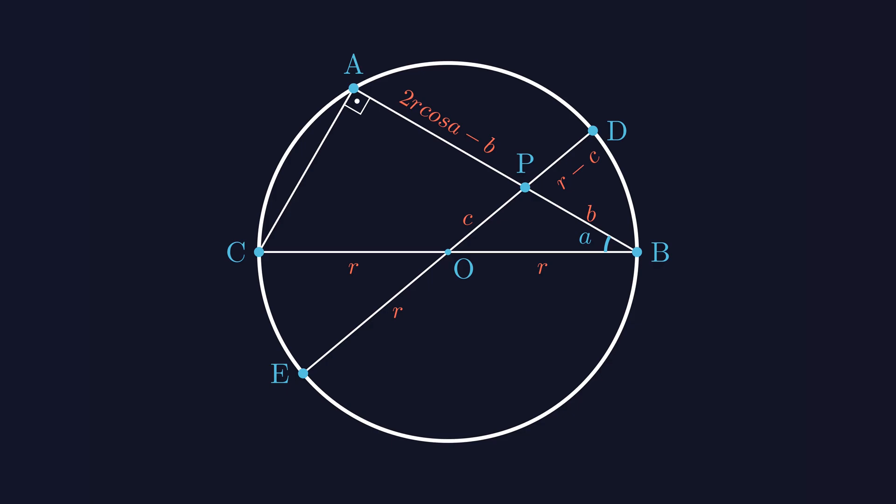Up to this point, we haven't really done anything major. We've just named some small line segments. To move forward, I need to show you another theorem. Let's put this part aside for a moment, we'll come back to it.